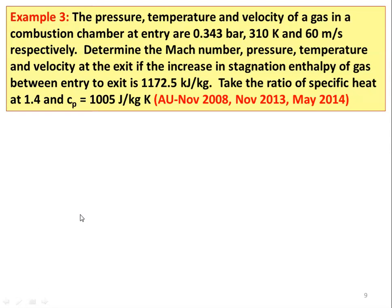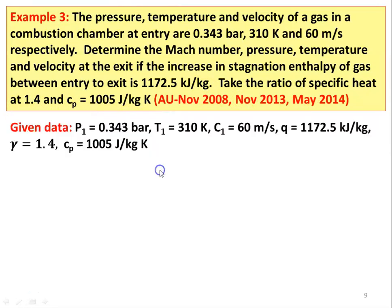Example number 3, from November 2008, November 2013, and May 2014 question papers: The pressure, temperature, and velocity of gas in a combustion chamber at entry are 0.343 bar, 310 Kelvin, and 60 meters per second respectively. Determine the Mach number, pressure, temperature, and velocity at the exit if the increase in stagnation enthalpy is 1172.5 kJ/kg. Given: gamma=1.4, Cp=1005 J/kg·K.